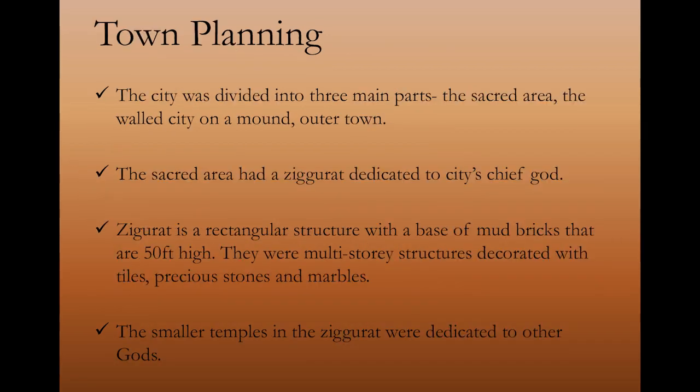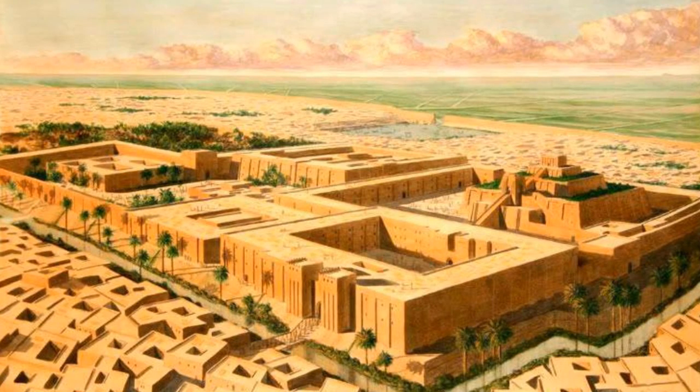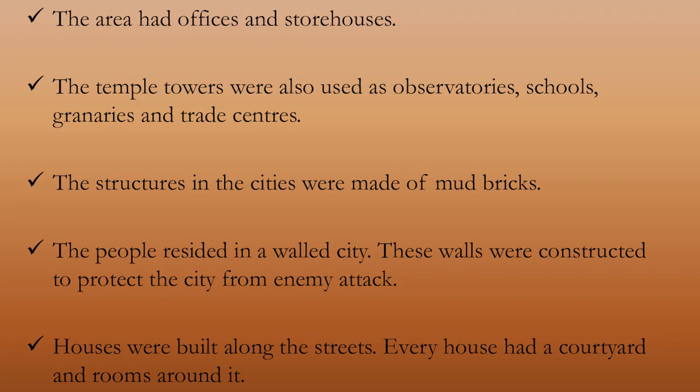Let us see how cities were planned in Mesopotamia. The city was divided into three parts: the sacred area, the walled city, and the outer town. The sacred area or temple area had a ziggurat dedicated to the city's chief god — each city had their own chief god. The ziggurat was built on a mound, a rectangular structure forming a platform — a base of mud bricks about 50 feet high. There were multi-storey structures decorated with tiles, precious stones and marbles. The ziggurat also had smaller temples dedicated to other gods. You can see the three divisions in the picture: the ziggurat area or sacred area, the walled city, and the outer town. This is the real picture of the ziggurat at the city of Ur.